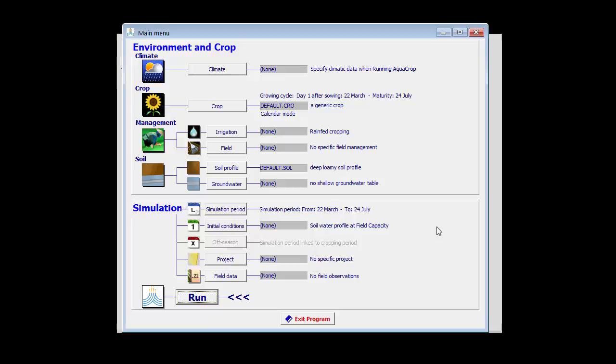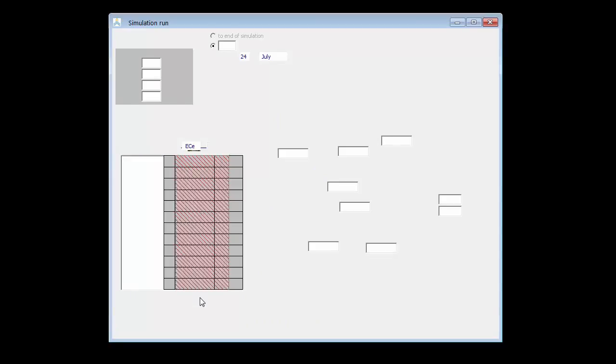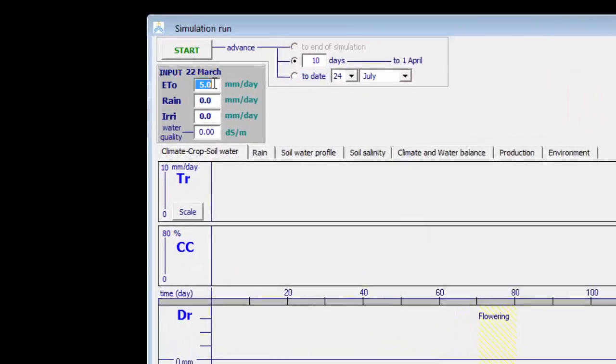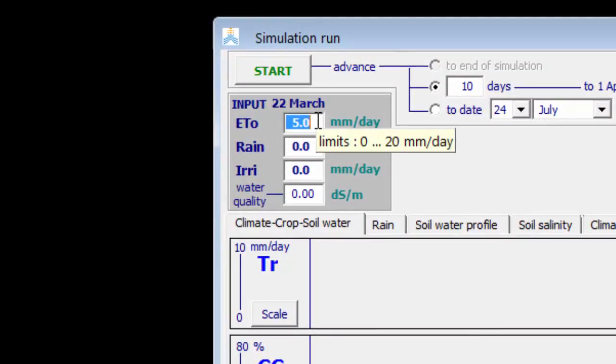Let's have a look at the simulation of drainage in AquaCrop. I take the default conditions as specified in the main menu and run a simulation. I'm going to put the reference evapotranspiration on zero because I want to show only the movement and retention of the water.